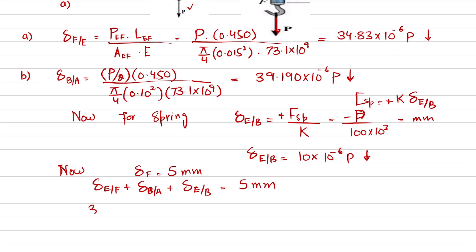This is 34.83 × 10⁻⁶ P plus 39.190 × 10⁻⁶ P plus 10 × 10⁻⁶ P equals 5 millimeters.